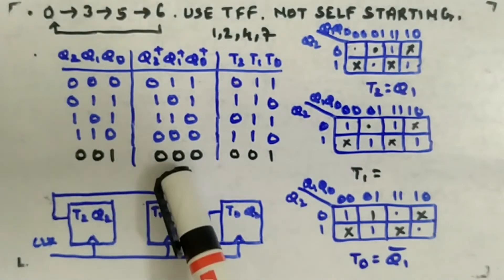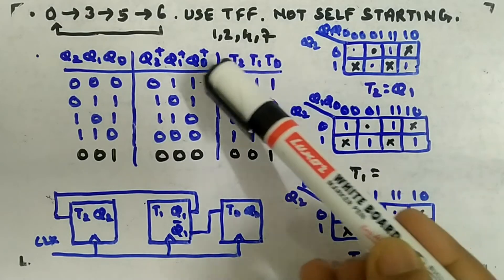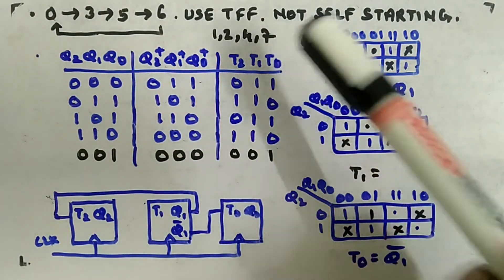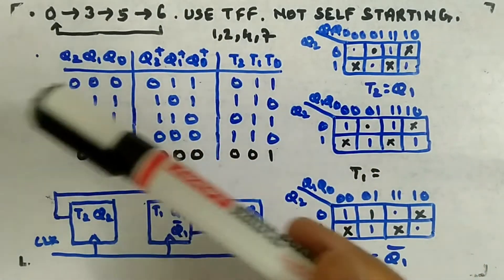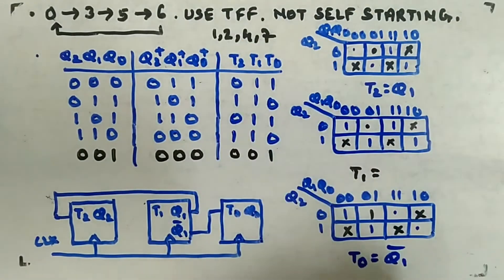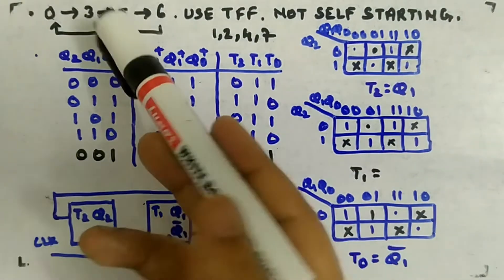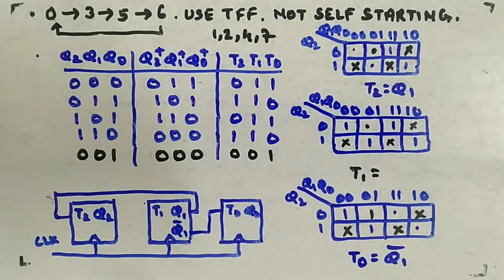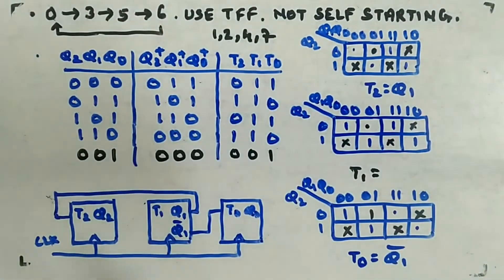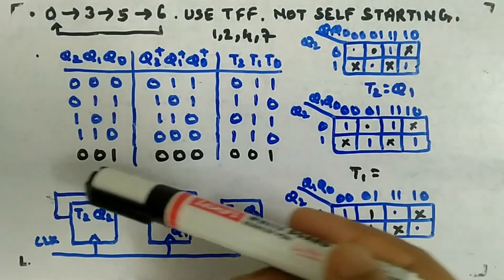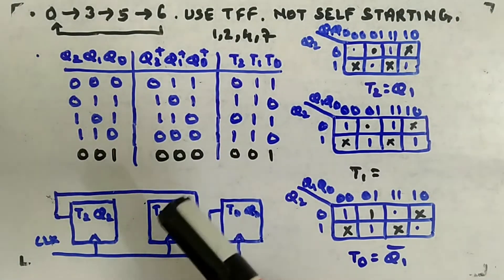With this addition: if the counter is at 2, it goes to 4, then 7, then 1, then 0 — joining the main sequence. If it starts at 7, it goes to 1 then 0. It takes more cycles but ultimately becomes self-starting. You could also pick state 2 and assign its next state as 3, 5, or 6 — the key is to break the loop.